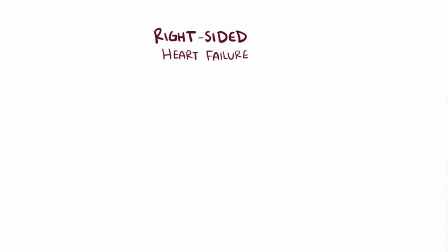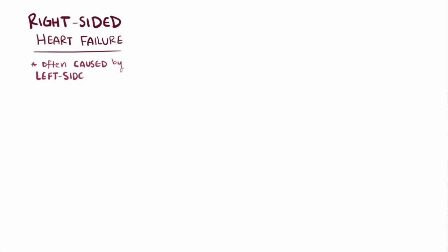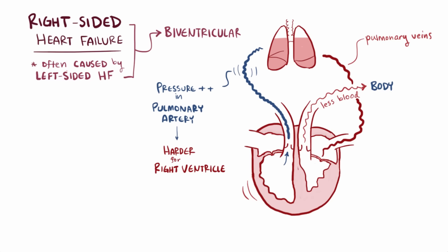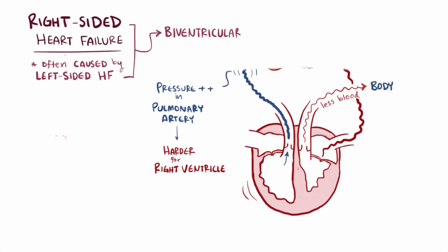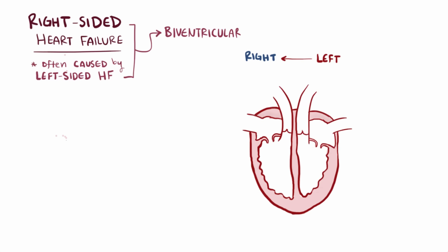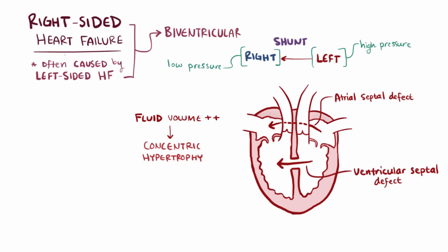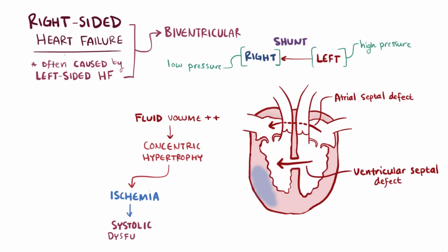Right-sided heart failure is actually often caused by left-sided heart failure. The fluid buildup increases pressure in the pulmonary artery, making it harder for the right side to pump blood — in which case the failure would be biventricular, since both ventricles are affected. Someone can also have isolated right-sided heart failure; for example, a left-to-right cardiac shunt such as an atrial septal defect or ventricular septal defect allows blood to flow from the higher-pressure left side to the lower-pressure right side, increasing fluid volume on the right side and eventually leading to concentric hypertrophy of the right ventricle, making it more prone to ischemia (systolic dysfunction) and less compliant (diastolic dysfunction).